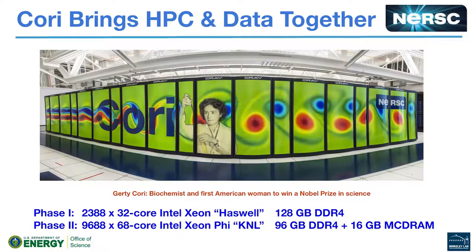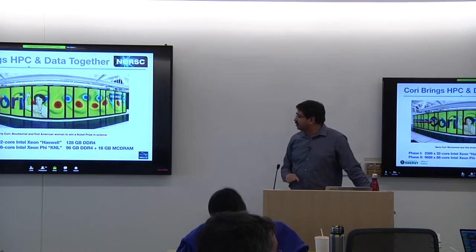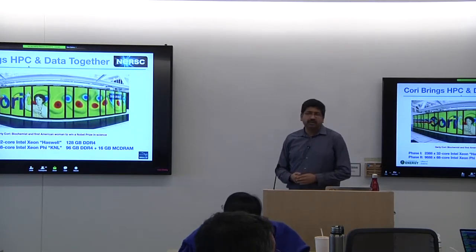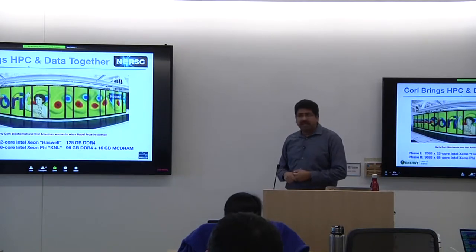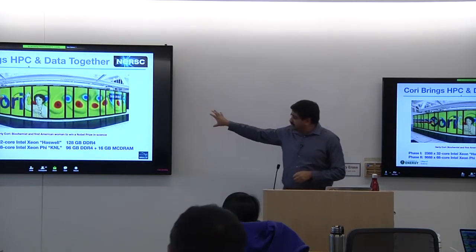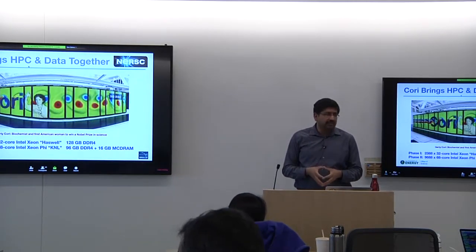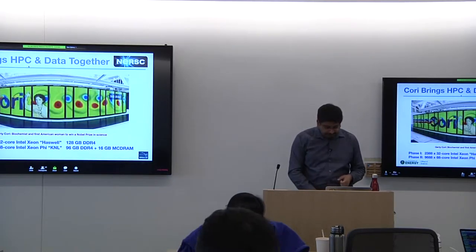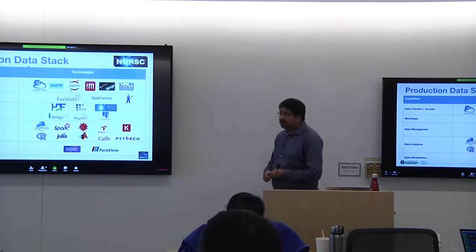We do have the Intel Haswell partition. In many ways, if you really do not want to modify your code, then the Haswell partition is where you can continue to run your jobs. But going forward, truly leveraging many-core computing is important, and the Knights Landing partition is what is recommended for those needs. In a few slides I'll cover the data-specific features we've configured on Cori.